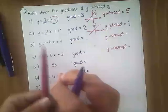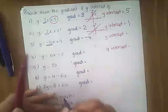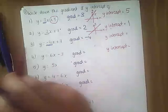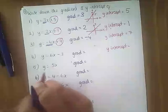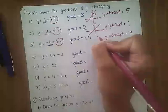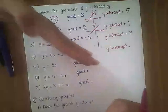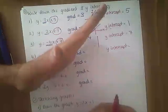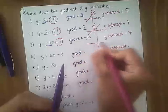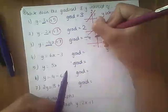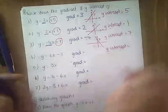This next one has a gradient of minus 4 — the number in front of x is minus 4 — and the y-intercept is going to be 7. Now if it's got a negative gradient, that means instead of the line going this way, the line goes this way. So this is obviously going to be very steep because it's got a gradient of minus 4, and it's going to go through 7 on the y-axis.